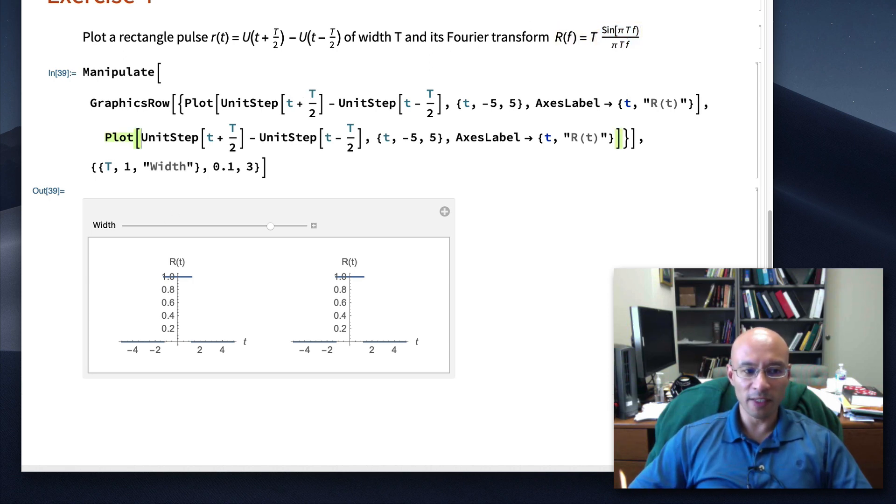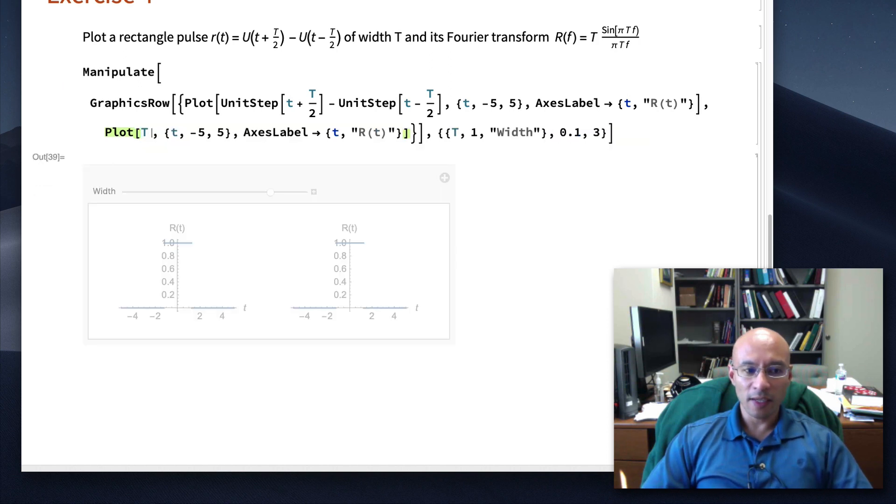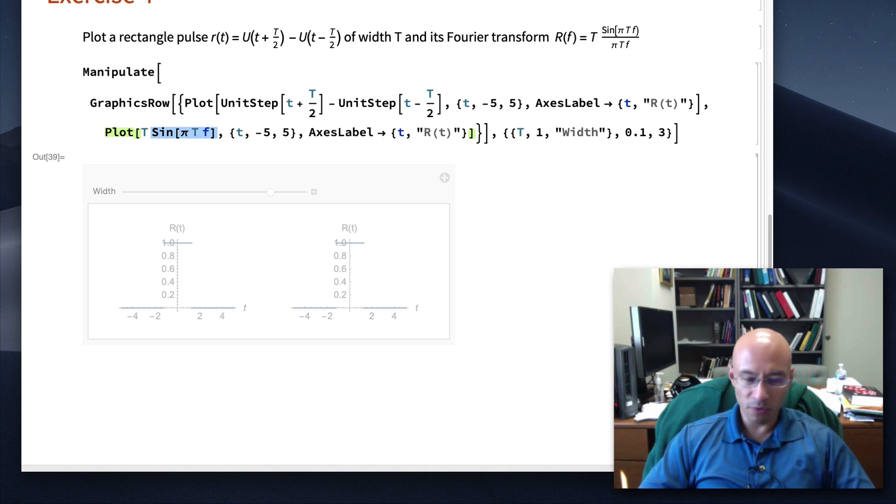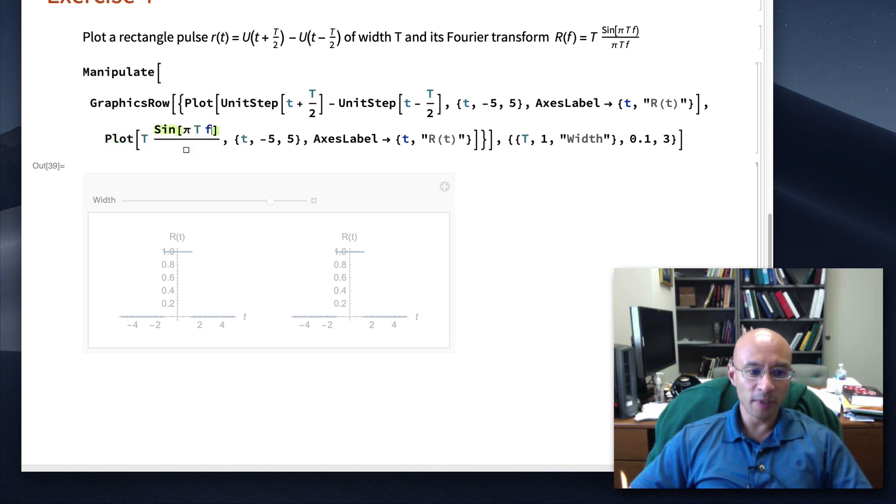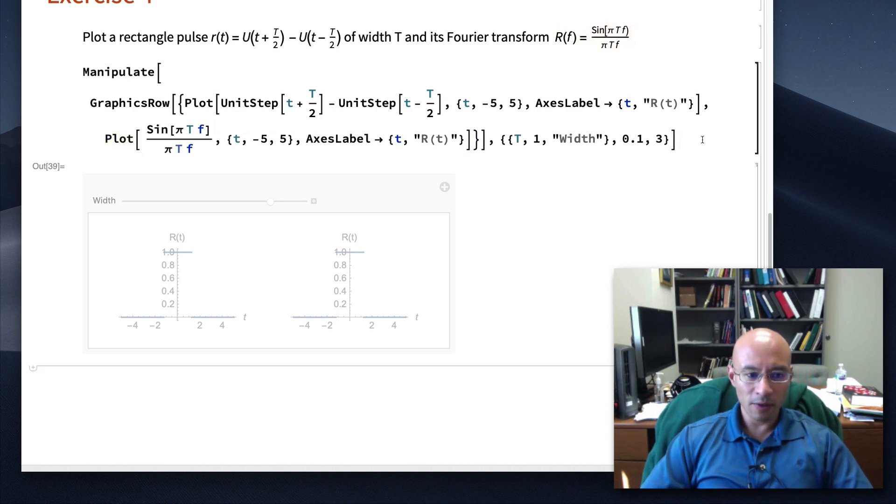And we're just going to use this function right here. The Fourier transform, like I said, of the rectangle function. So, we'll put this in. It's T, and then sine, and pi. So, escape, P, escape, pi. And then to multiply, of course, you need a space, and then a T, and then an F. And then I'm going to highlight this sine, and control forward slash to divide. And then I'm going to copy this pi T, F here. I think I made an error. This T does not belong, so let's change that. This T does not belong here. So, now if I plot this, I have an error.